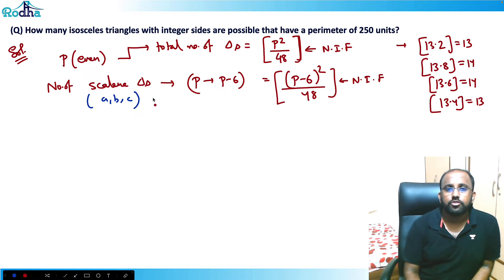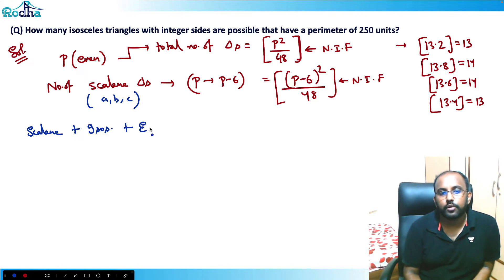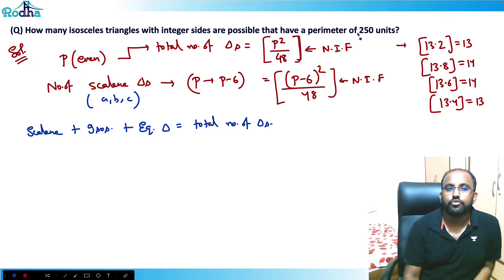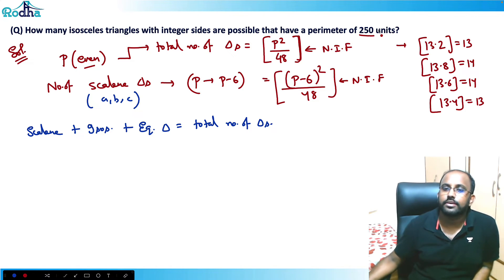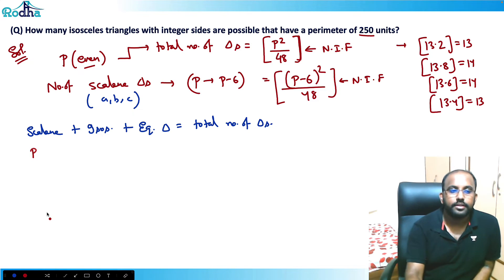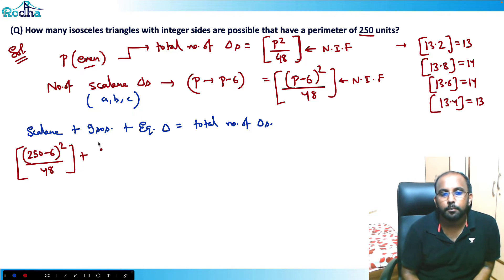In this question we have a perimeter of 250 units. We know that: number of scalene triangles + number of isosceles triangles + number of equilateral triangles = total number of triangles. Since p = 250 is even, the number of scalene triangles is ⌊(250−6)²/48⌋ = ⌊244²/48⌋.